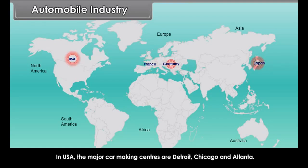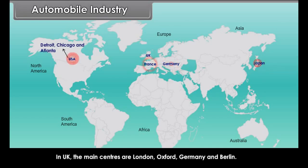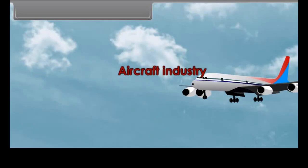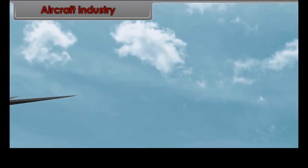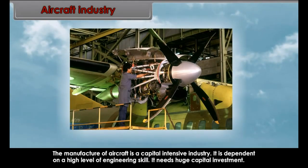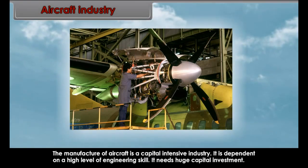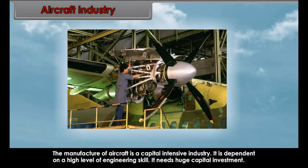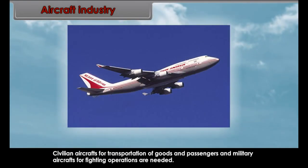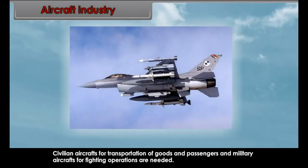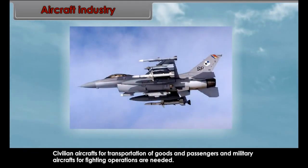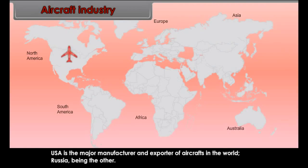Automobile industry is located where there is abundance of cheap and skillful labour, good demand, and easy availability of power supply. The world's major car producers are USA, Japan, Germany, and France. In USA, major car-making centres are Detroit, Chicago, and Atlanta. In UK, major centres are London and Oxford. Automobiles are made on an assembly line — engines, wheels, etc. are made in different factories and then assembled in the automobile industry.